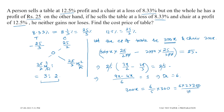Our answer for 300x gives us 360. So the cost price (CP) of the table equals Rs 360.